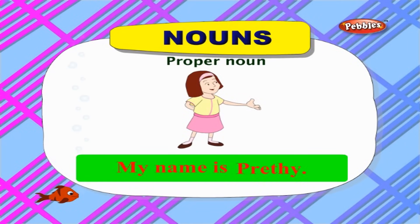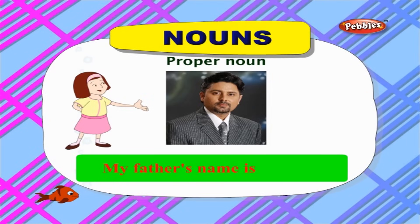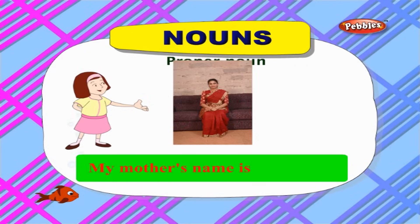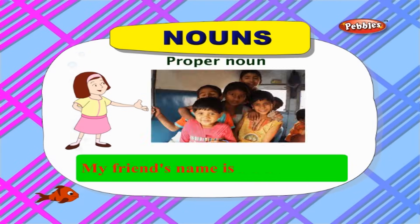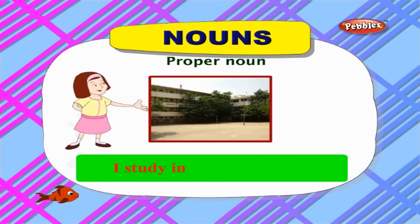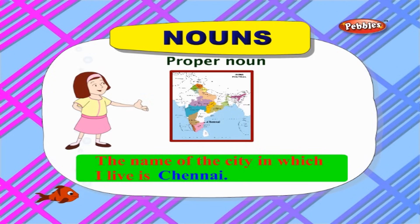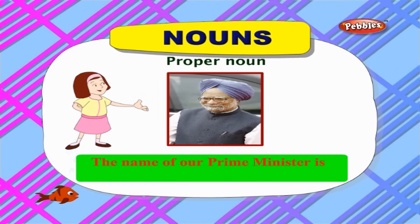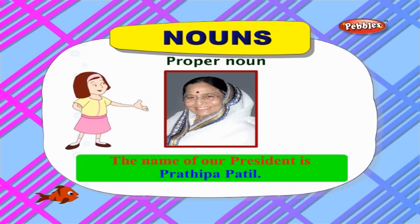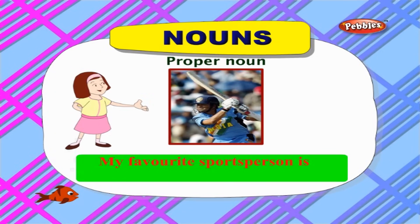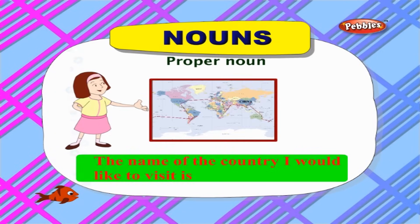Let us see some more examples where we use special nouns often. My name is Preeti. My father's name is Ravi. My mother's name is Shalini. My friend's name is Priya and Manju. I study in CNT school. The name of the city in which I live is Chennai. The name of our Prime Minister is Dr. Manmohan Singh. The name of our President is Pratibha Patil. My favourite sports person is Sachin Tendulkar. The name of the country I would like to visit is China.